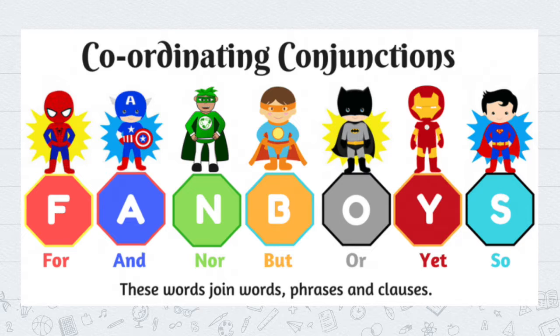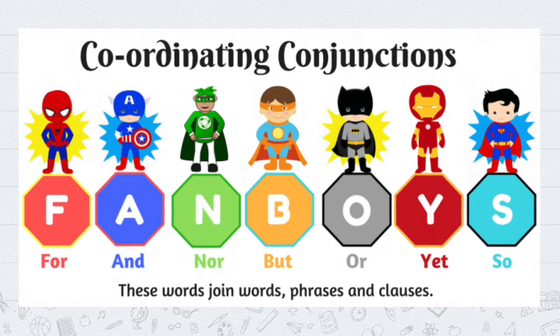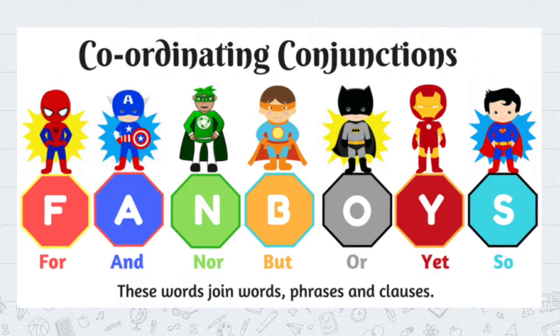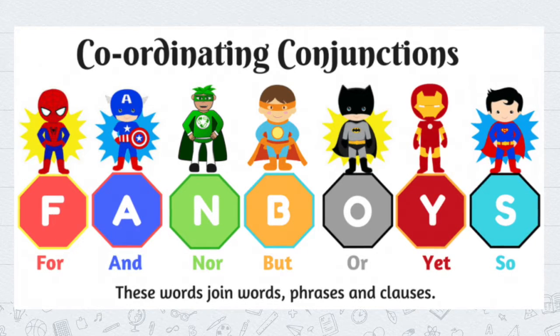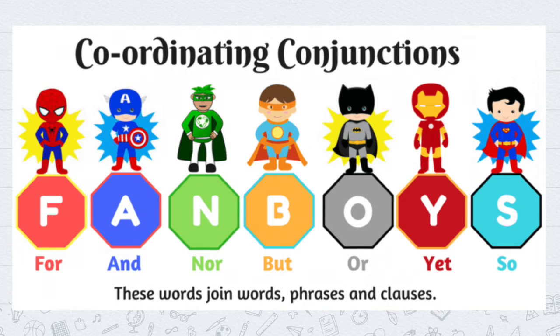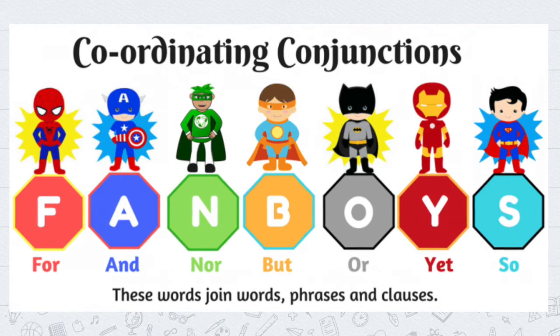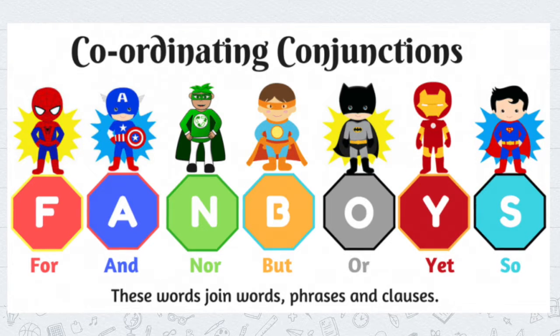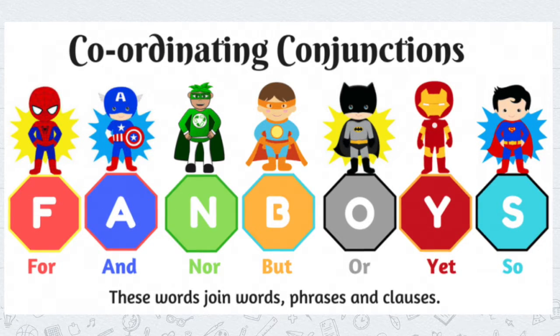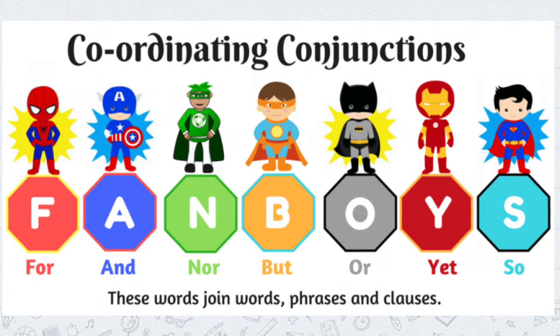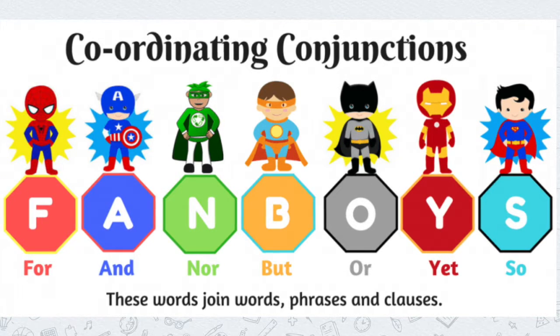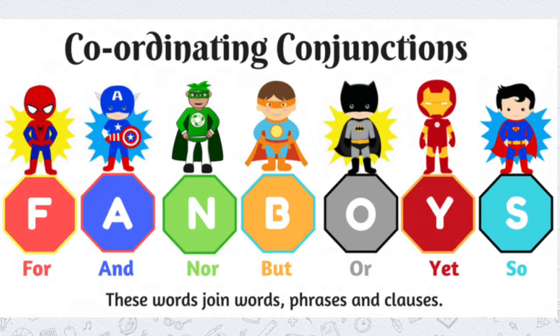An easy way to remember all of them is to think about the word FANBOYS. The most common coordinating conjunctions are: For, And, Nor, But, Or, Yet, and So. Those are the most common words I use to combine words, phrases, and clauses together.